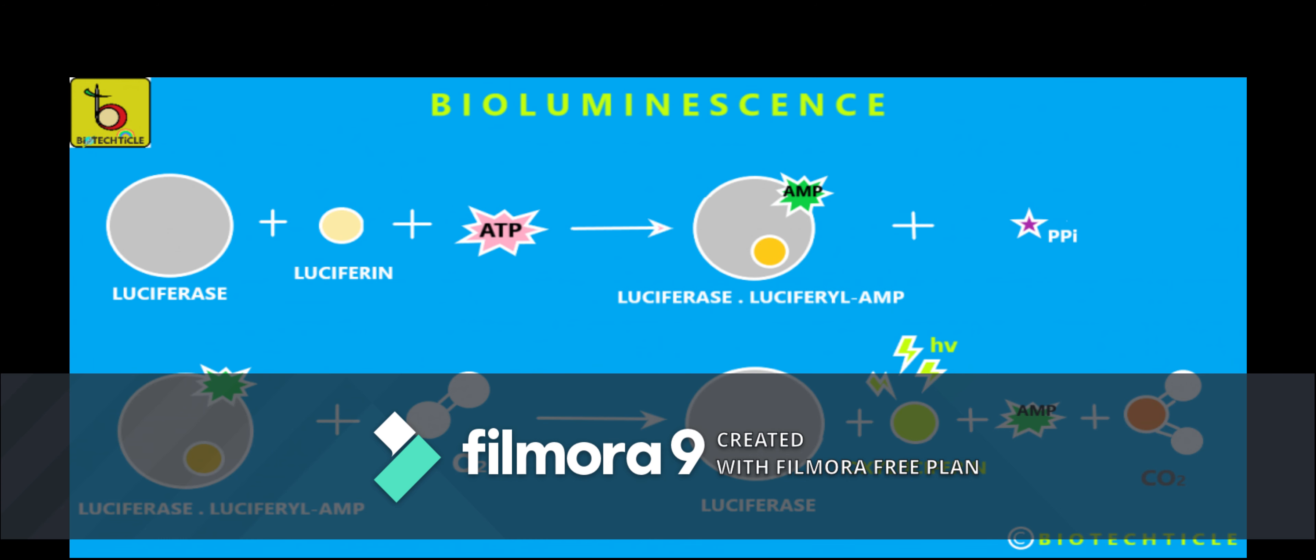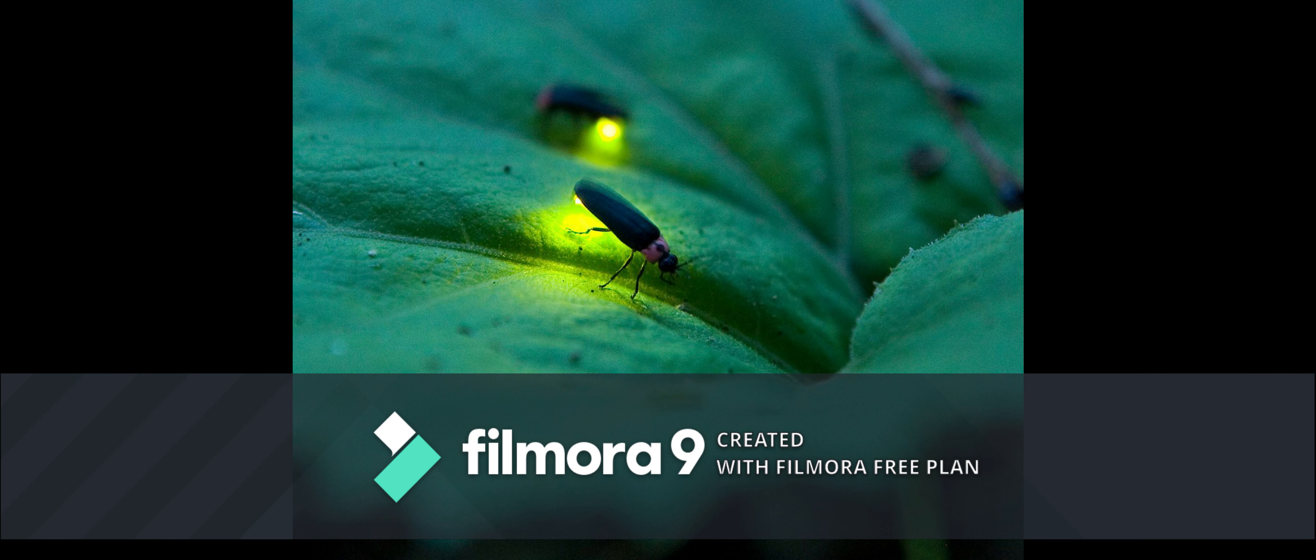This forms a single unit called photoprotein. This molecule can be triggered to produce light when a particular type of ion is added to the system, such as calcium. This shows how organisms glow in darkness. In bioluminescence, the excitation energy is supplied by chemical reaction rather than from a source of light.